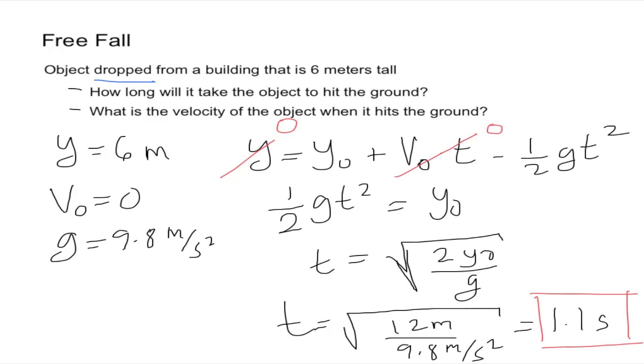Now for the second question. The question was what is the velocity of the object when it hits the ground? And now we have one more value which is time. So we could use the next formula which stated that the final velocity Vy or Vf is equal to the initial velocity minus the gravity times time.